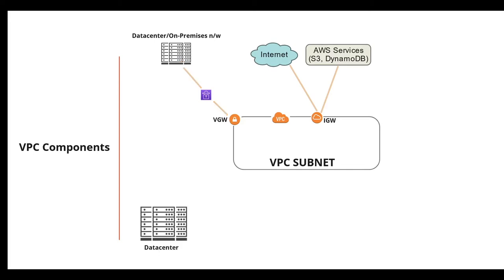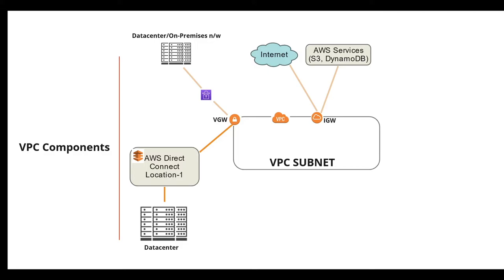For a dedicated connection from your data center to AWS, AWS Direct Connect enables customers to have a low-latency, secure, and private connection to AWS requiring higher speed or lower latency than the internet. The key difference between Direct Connect and SSL VPN is that VPN connectivity uses the public internet — which can have unpredictable performance and security concerns — whereas Direct Connect bypasses the public internet and establishes a secure dedicated connection from your infrastructure to AWS.